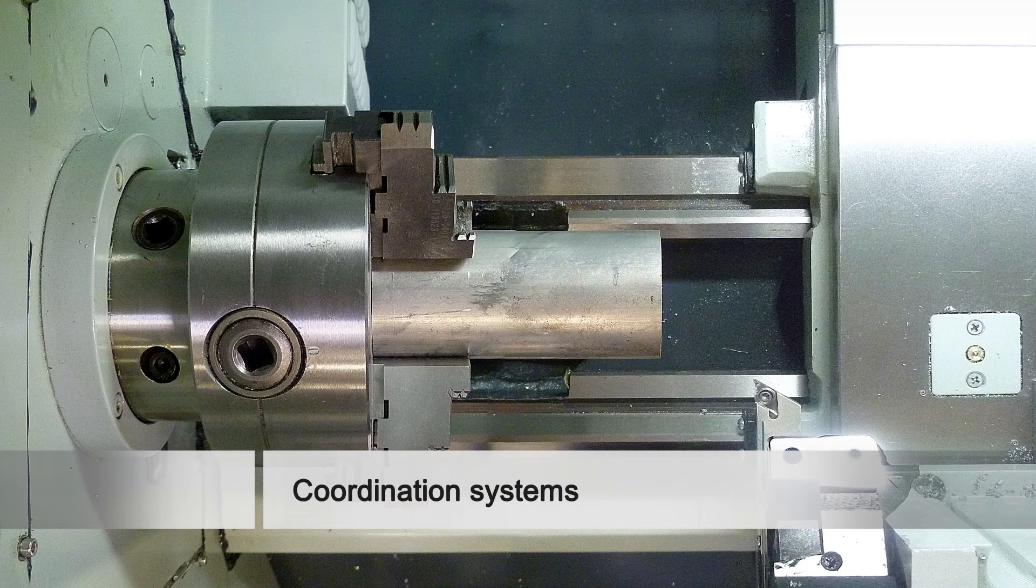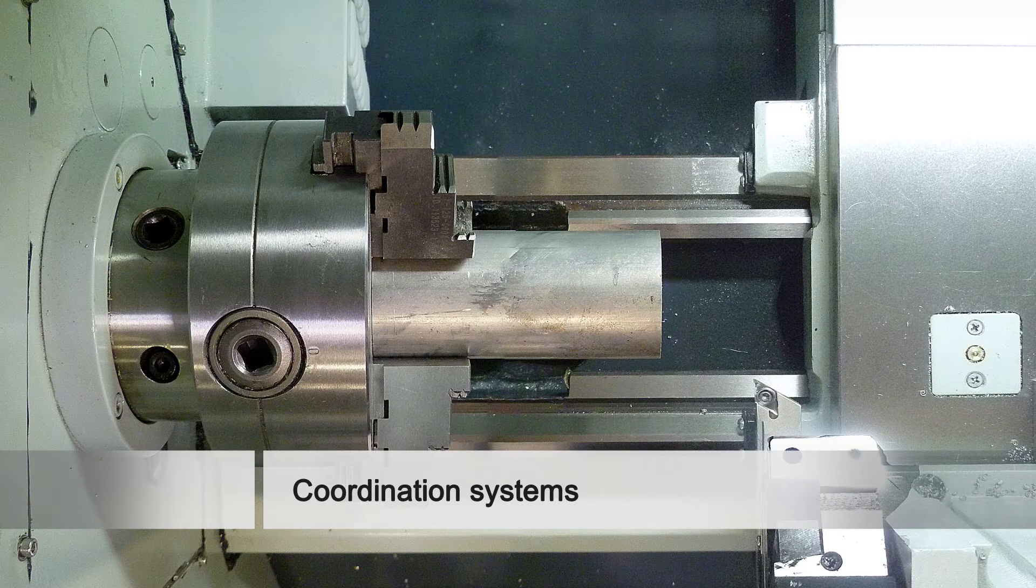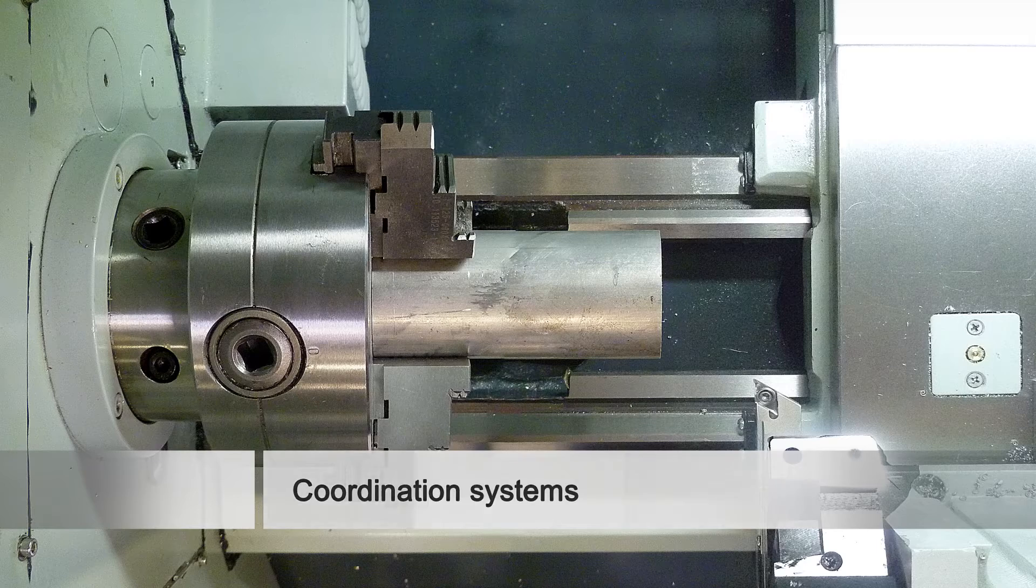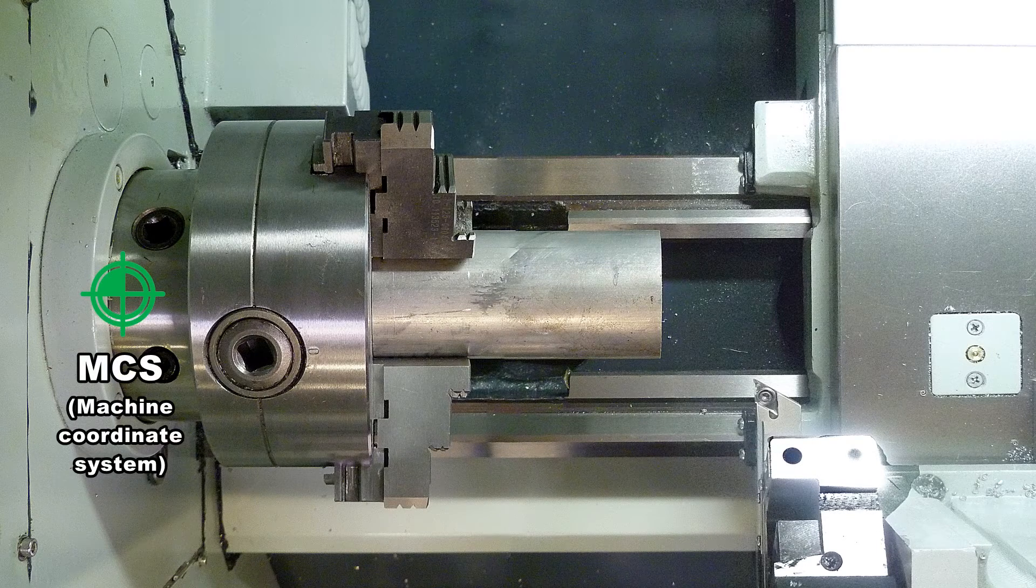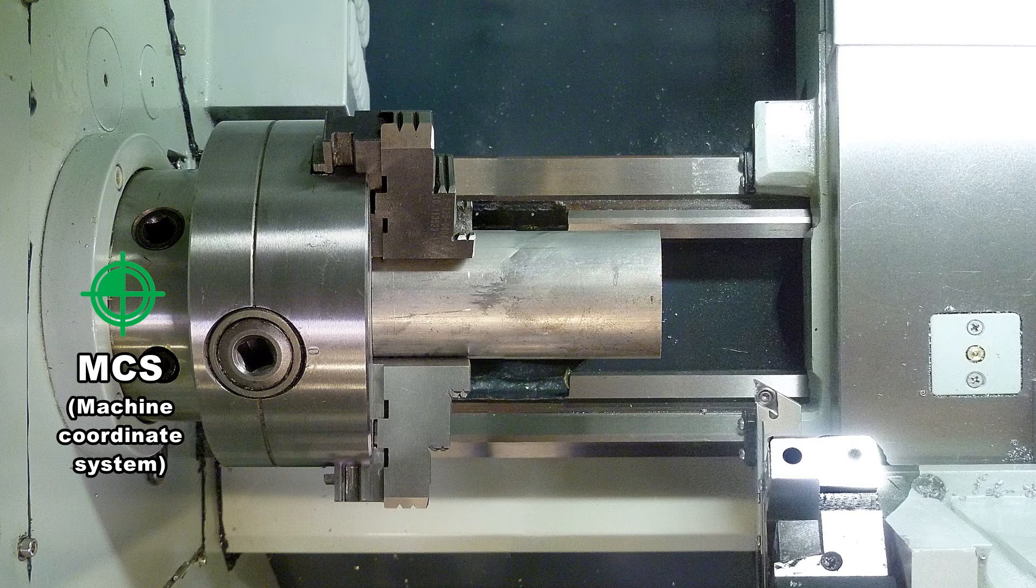The workpiece and all the tools are clamped. Here is shown the relevant coordination information of the machine. The machine zero point is determined by the machine tool manufacturer and cannot be changed.